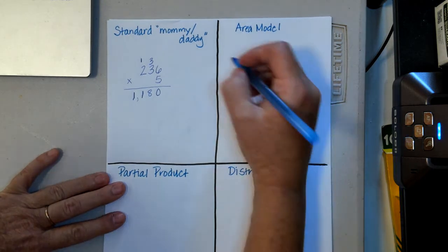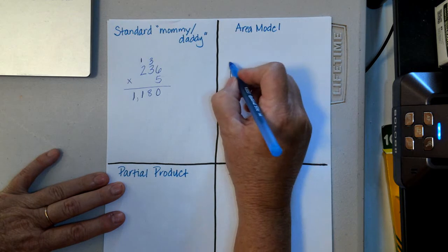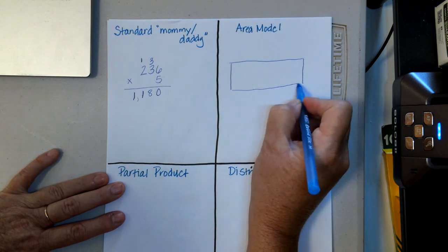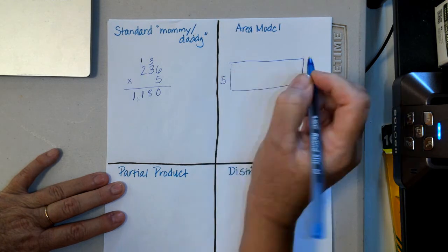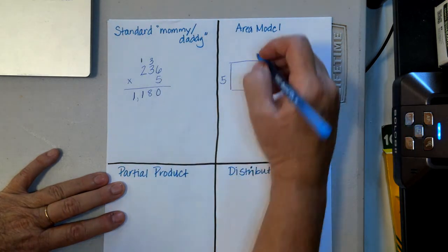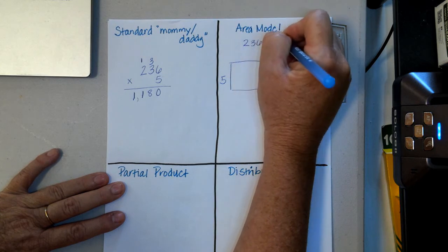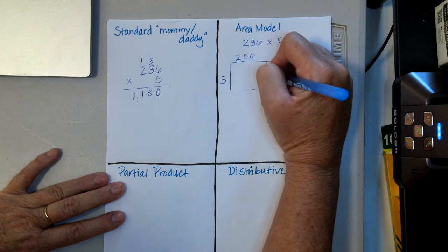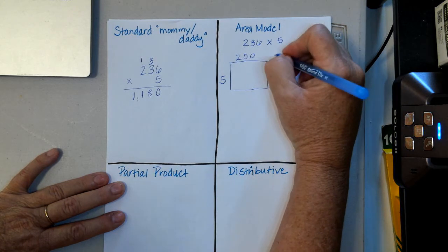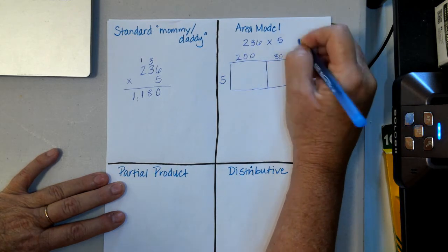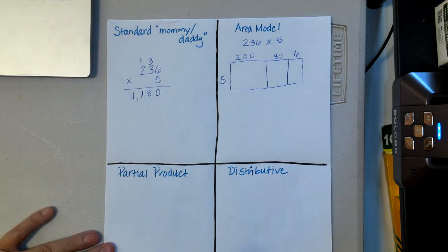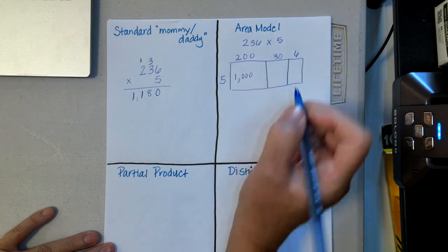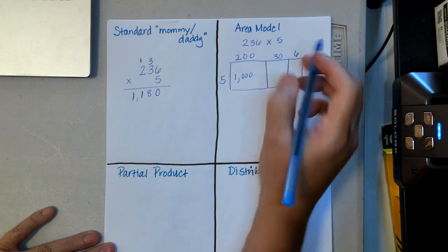Now I'm going to show you the area model. I'll create a box with space for three numbers, and I'll put my five on the side. Then I break up 236 into its place values: two hundred, thirty, and six ones.